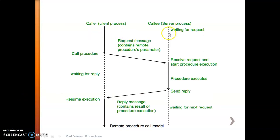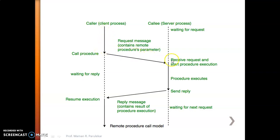In this diagram, we observe that there is a caller and there is a callee. This is a client process and this is a server process. Whenever the caller — that is the client process — sends a request message to the server, that request message will contain the remote procedure parameters.